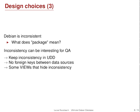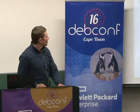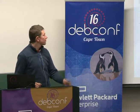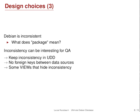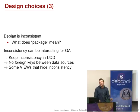Another design choice is that we want to be inconsistent, because Debian is inconsistent. For example, we have various definitions of packages across different services. One good example is popularity contest, where you have a package column in what Popcorn exports, but that's actually just a copy of what users of Popcorn provided. So if they put a path or a file name in that, it ends up in the data that popcorn.debian.org exports. We keep that inconsistency in UDD because that could be interesting for QA, which means we don't try to have foreign keys between different data sources, but we also provide some views that hide inconsistency to make it easier for the user to run queries.